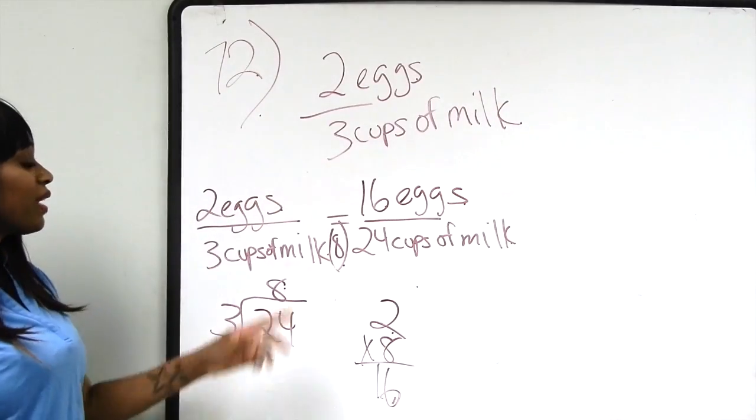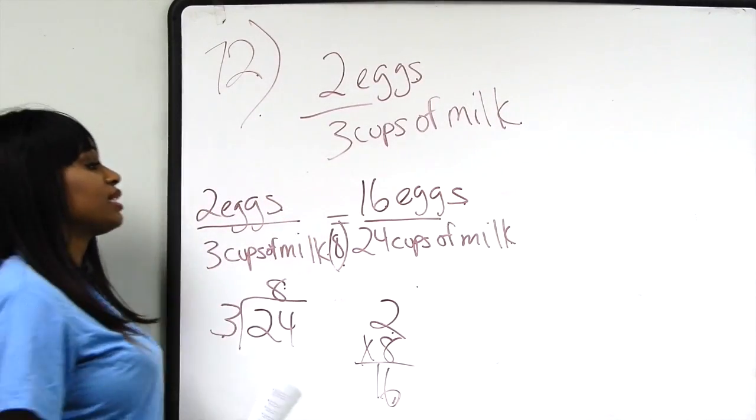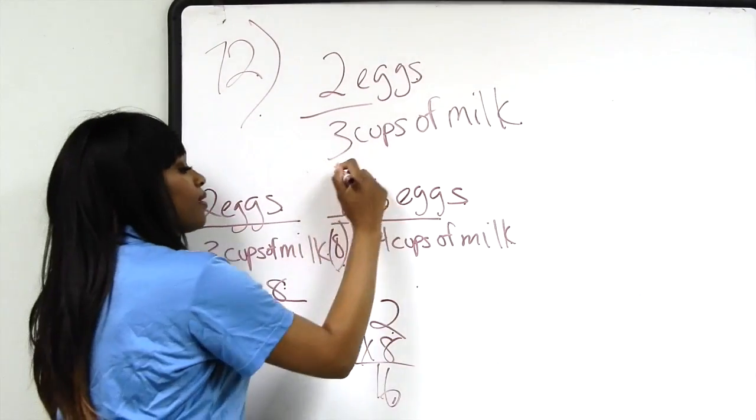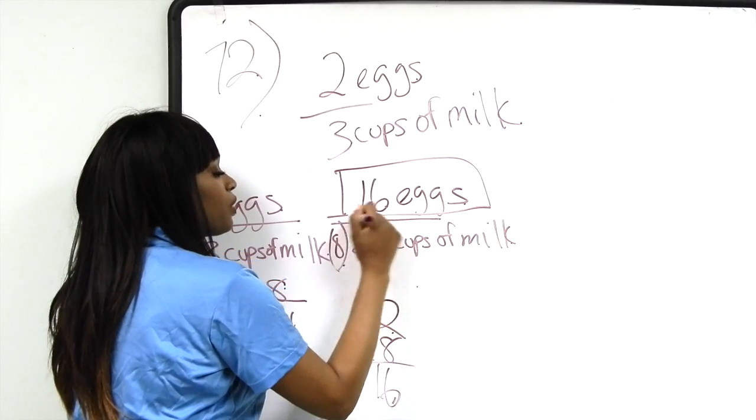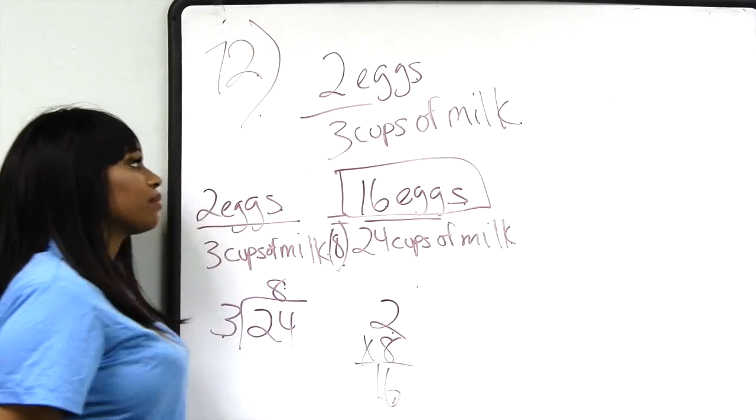The final answer is 16 eggs for every 24 cups of milk.